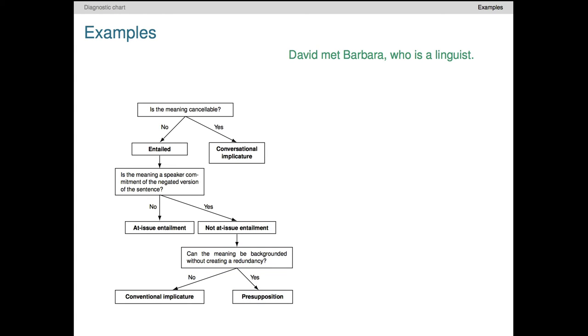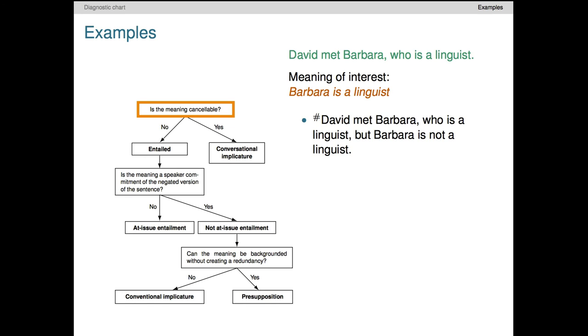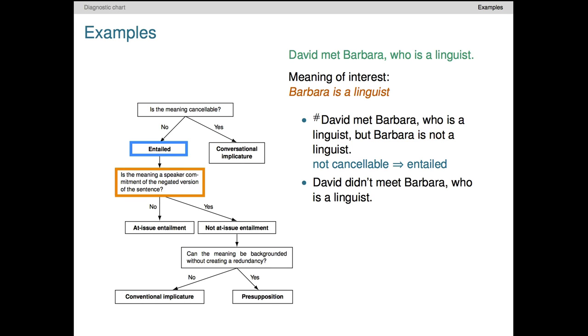Let's do one more example. Sorry for the spoilers, but we would like to reach the conventional implicature branch. The sentence is 'David met Barbara, who is a linguist,' and we're interested in what happens with this appositive 'who is a linguist,' conveying our target meaning that Barbara is a linguist. It's very clear that we can't cancel this meaning by expressing the negation of the appositive right after it, so a conversational implicature diagnosis is out of the question. We move to the entailed branch and negate the sentence. The appositive looks like it is in the scope of the negation, but its content is not negated at all. The speaker remains committed to Barbara being a linguist and has denied only that David met Barbara. So this is some kind of non-at-issue meaning.